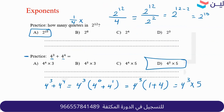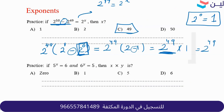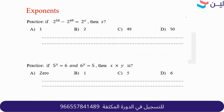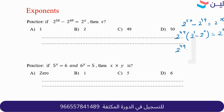Two to the power of zero is always 1. For example, three to the power of zero is 1, four to the power of zero is 1. Let me redo the problem: 2 to the 50 minus 2 to the 49 equals 2 to the x. Take 2 to the 49 as common factor: 2 to the 1 minus 2 to the 0 equals 2 to the x. That gives 2 to the 49 times (2 minus 1) equals 2 to the x, so 2 to the 49 equals 2 to the x, and x equals 49.